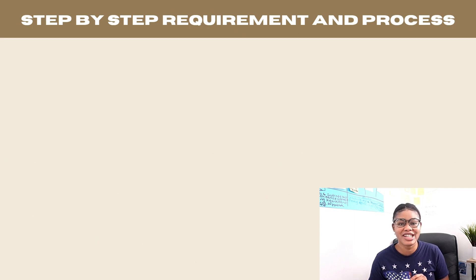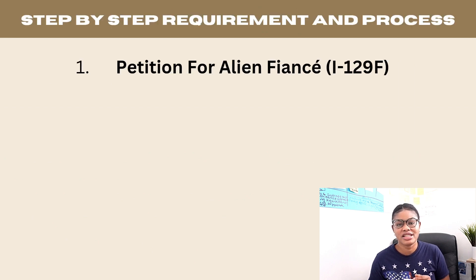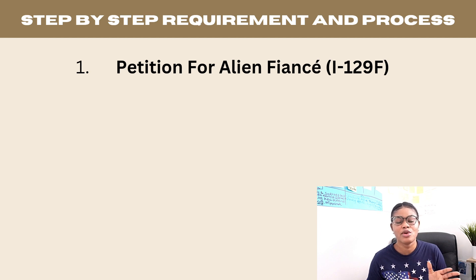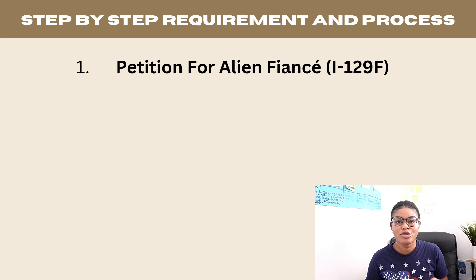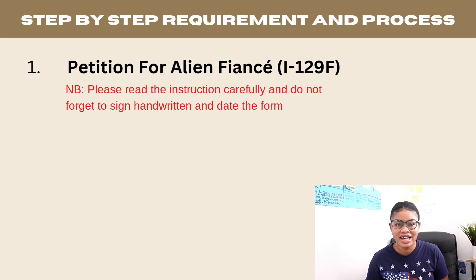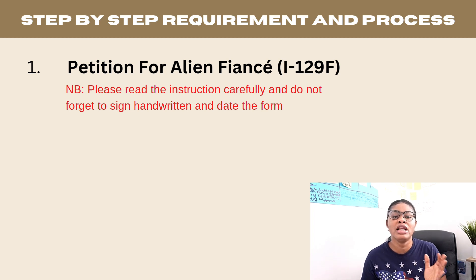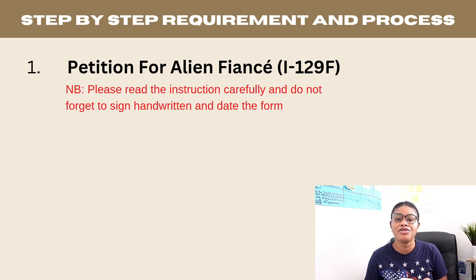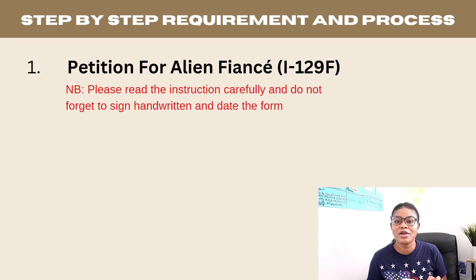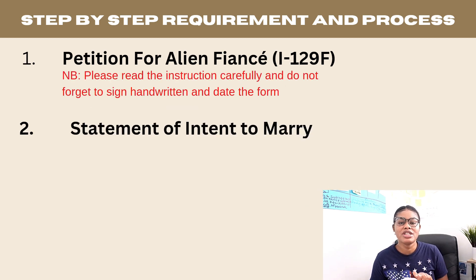Now let's start the application process. The petitioner files Form I-129F for the alien fiancé. You can download this form on the official USCIS website — I'll leave the link in the description. Please read the instructions carefully. Note that you have to sign handwritten and date the form; USCIS does not accept electronic signatures. Don't make mistakes when filing, as errors will cause delays due to the current backlogs. Take it to someone who can help you fill it out properly.